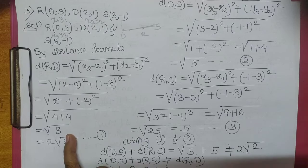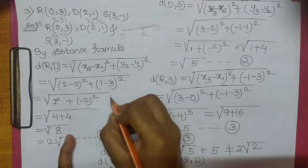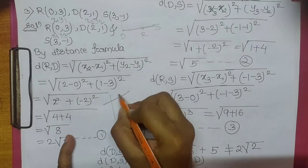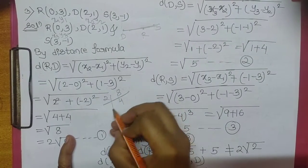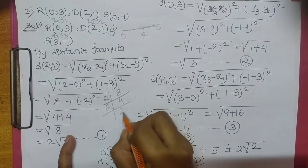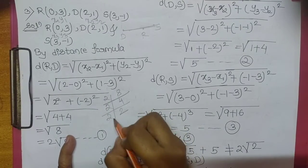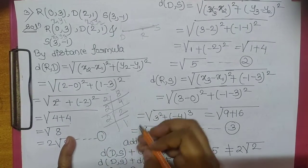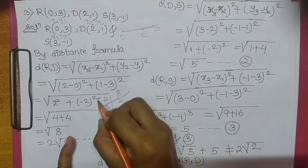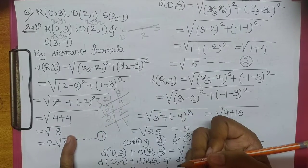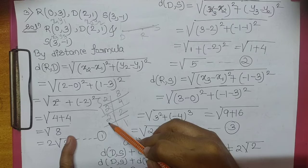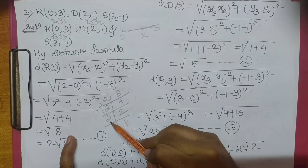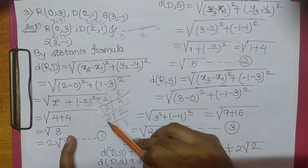4 plus 4 aapka 8 hai. Square root of 8: 8 = 2 × 4 = 2 × 2 × 2. Jiske pairing possible hai usko square root ke outside mein. So, RD = 2 root 2.